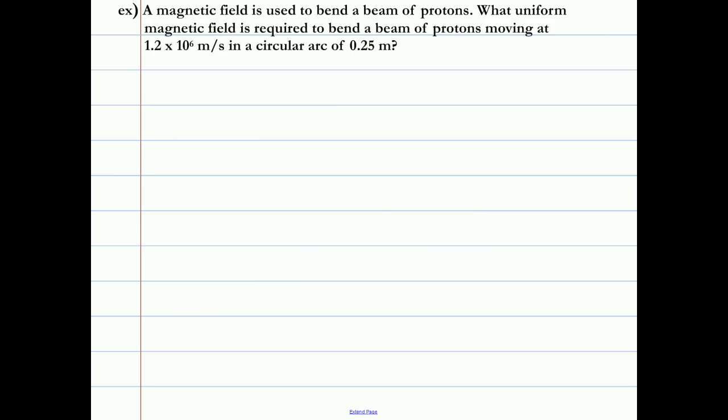Another example. We've got a magnetic field used to bend a beam of protons. What uniform magnetic field is required to bend a beam of protons moving at 1.2 times 10 to the 6 meters per second in a circular arc of 0.25 meters? So we'll draw a circle. The protons will go in a circular fashion with a radius of 0.25 meters. They're going to speed along with 1.2 times 10 to the 6 meters per second. And we want to find out what the magnetic field is to do that.